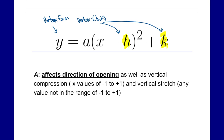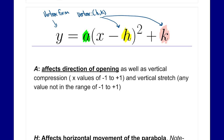We have three variables to consider: the a value, the h value, and the k value. These three variables change how our graph looks. The a value affects the direction of opening as well as the vertical compression or vertical stretch — so it tells us two things: compression or a stretch.